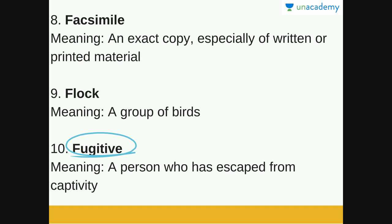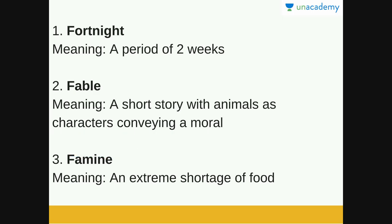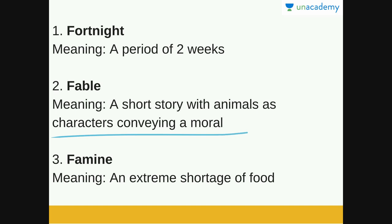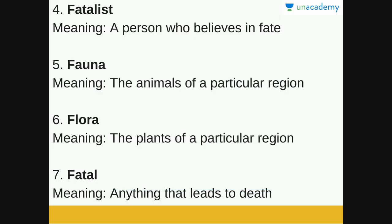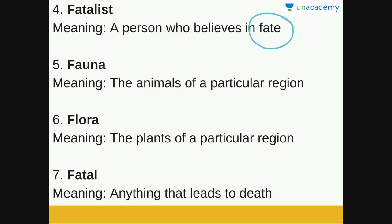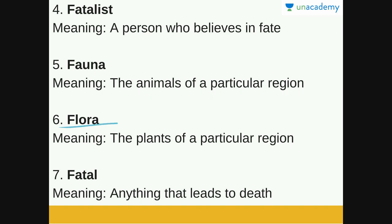Let's go over all the words again for a quick revision. Fortnight is a period of two weeks or 14 days. Fable is a short story with animals as characters conveying a moral — think of the Panchatantra tales. Famine is an extreme shortage of food. Fatalist is a person who believes in fate, that is, God's will. Fauna is the animals of a particular region — animals of a city, state, or country. Flora is the plants of a particular region.